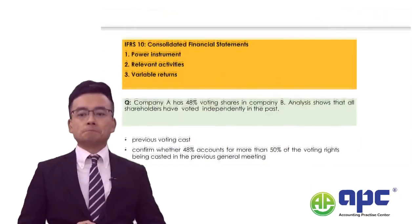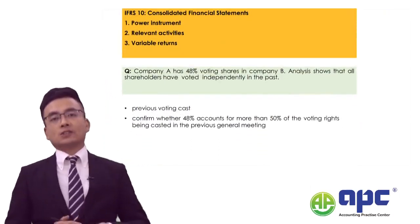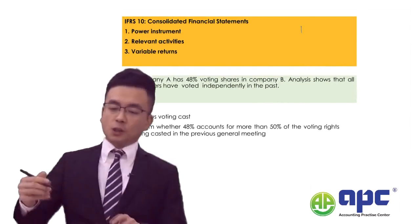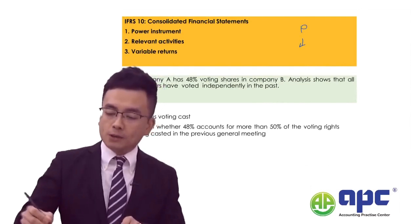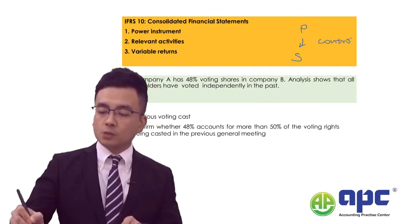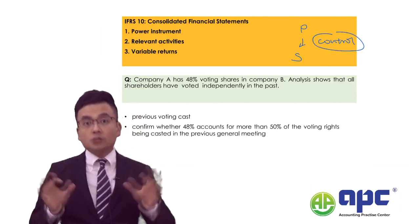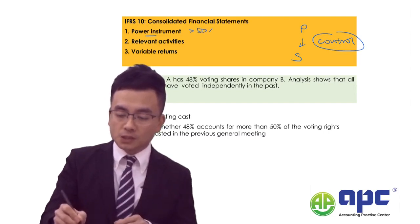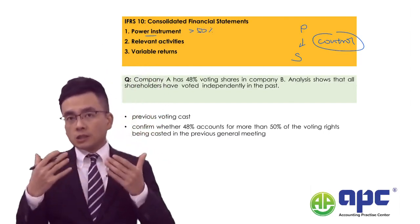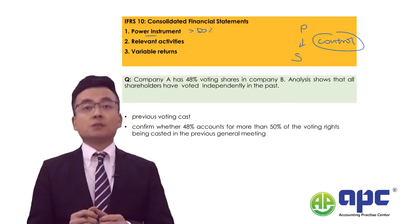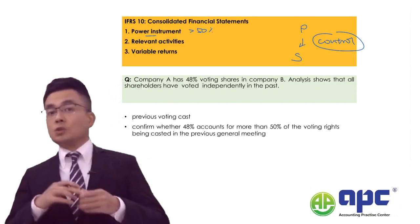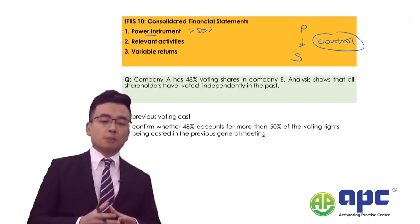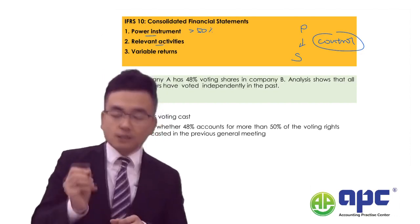The final example, always examined in question one, talks about the group standard. In order to qualify as having a parent-subsidiary relationship, we need to demonstrate control power. To have that control power, you need three things: a power instrument — more than 50% of the voting shares — or you can dominate the board with more than 50% of board members, or set the remuneration for more than 50% of the management team.